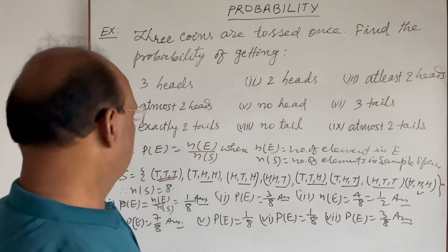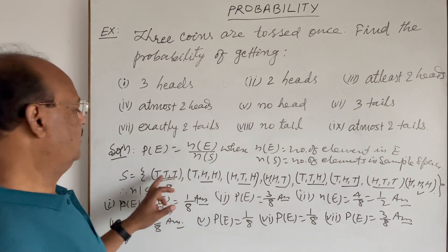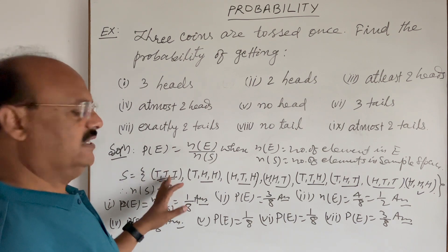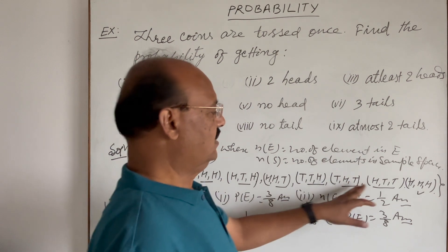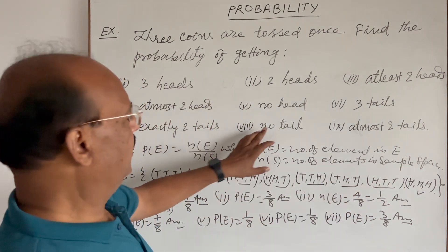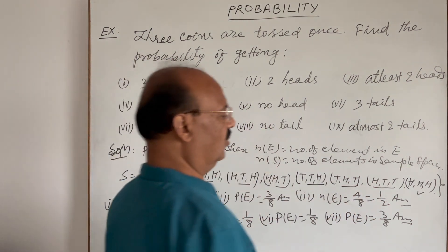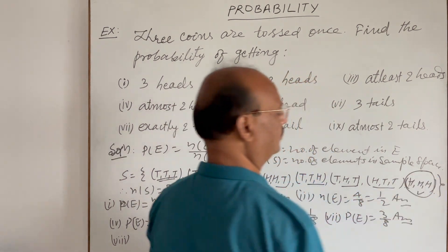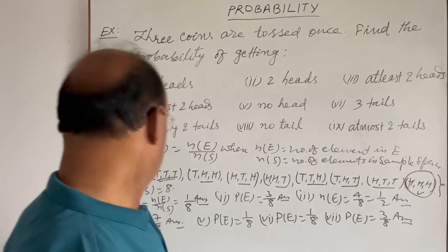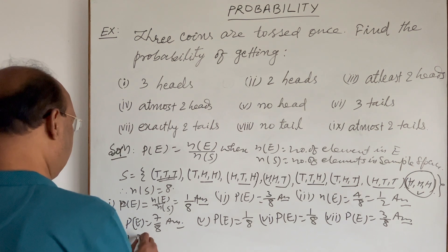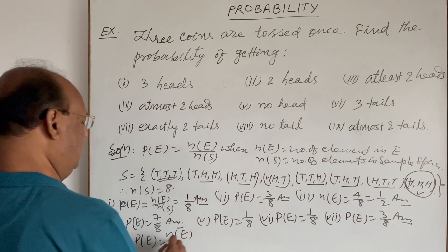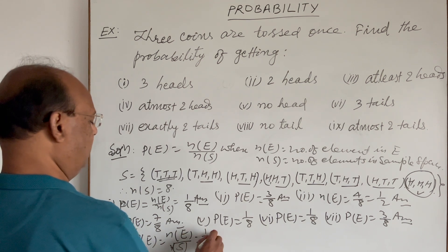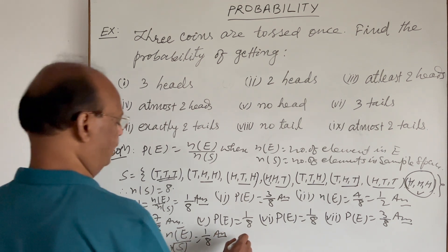Eighth part: no tail. Looking at the sample space, T T T has three tails, others have one or two tails, and only H H H has no tail. So with the condition of no tail, n(E) is 1 and using the formula n(E) / n(S), the probability is 1/8.